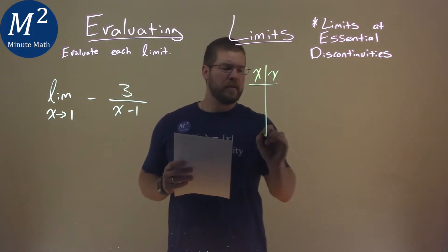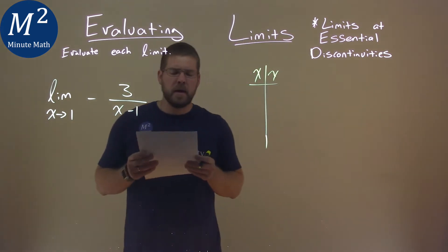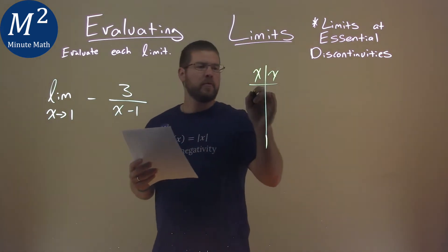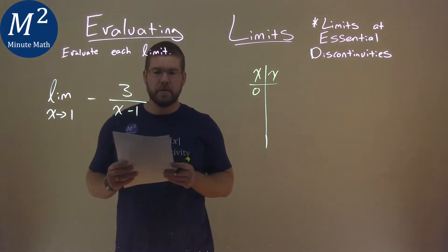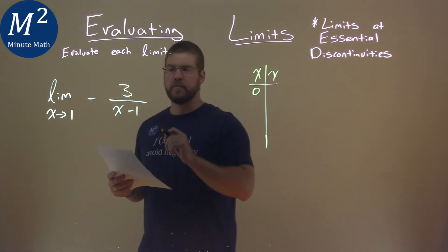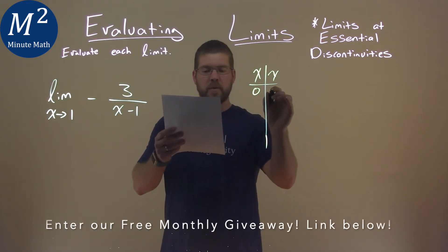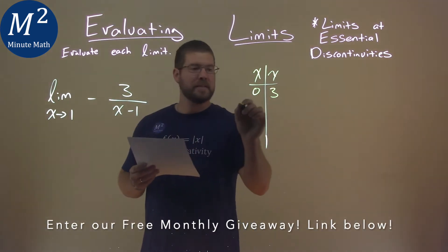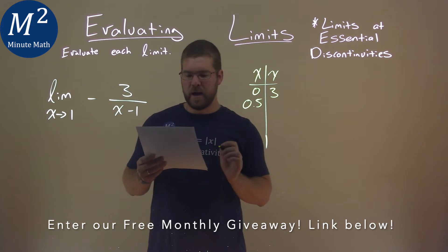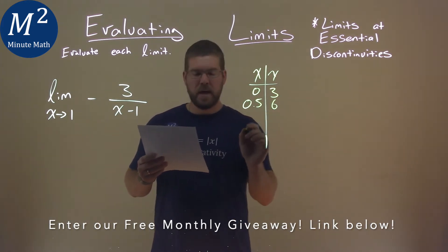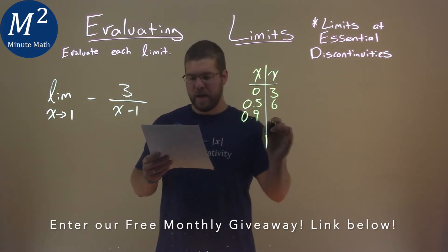Now I've calculated these values ahead of time for you. If we plug 0 in for x, approaching 1 from the left, we get positive 3. If we put 0.5 in for x, we get 6, and if we put 0.9 in for x, we get 30.